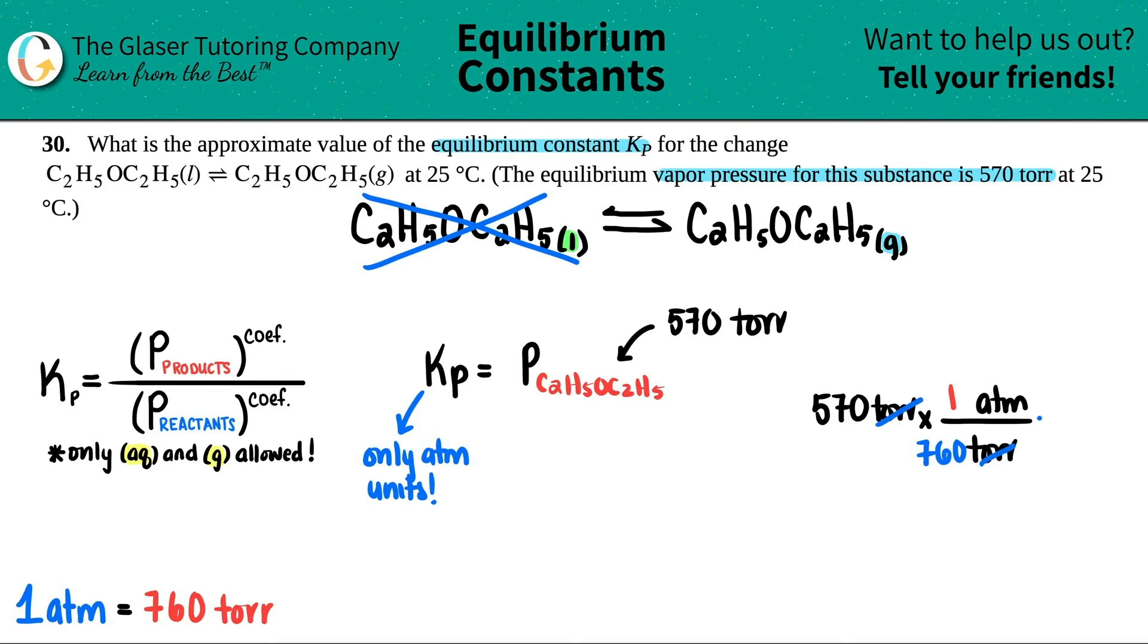So I get 0.75 atm. This equals 0.75 atm, and this is the number that I'm going to use.